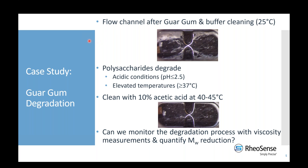Our case study today relates to guar gum degradation. We needed to look into this for a very practical reason. We recently introduced an extensional flow channel compatible with our Initium automated system. While helping a customer with this flow channel and trying to clean out their guar gum samples, we found our original cleaning protocols — using buffer solution at room temperature — were leaving a lot of guar gum behind in the flow channel. This is shown in a zoomed-in image of our extensional chip with a lot of gunk left behind.